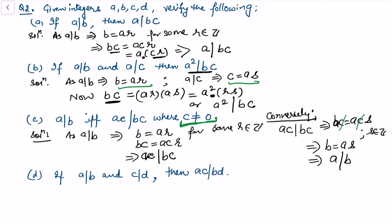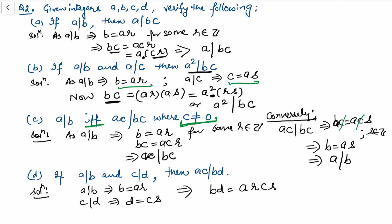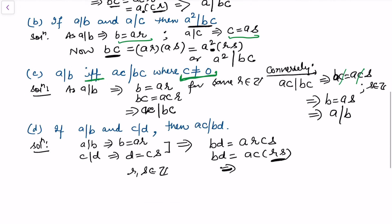For part d: if a divides b and c divides d, then ac divides bd. Since a|b we have b = a·r, and since c|d we have d = c·s. Multiplying gives bd = (ar)(cs) = ac·(rs). Since rs is an integer, ac divides bd, proving part d.